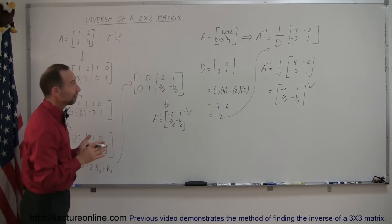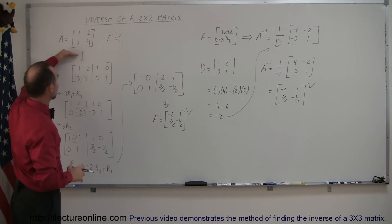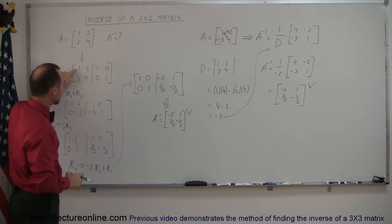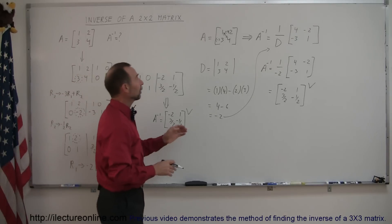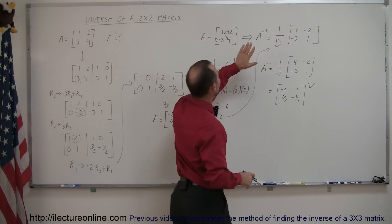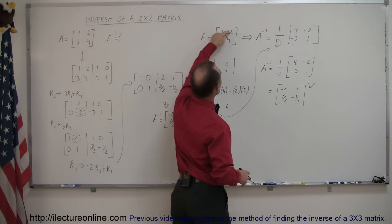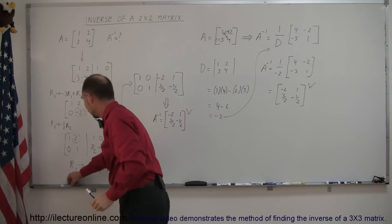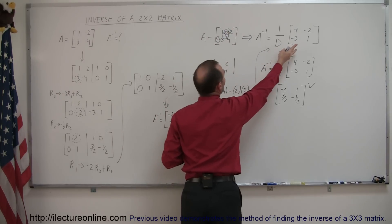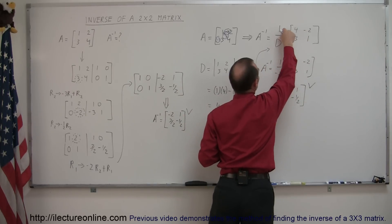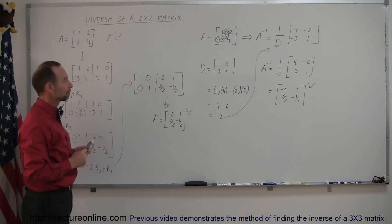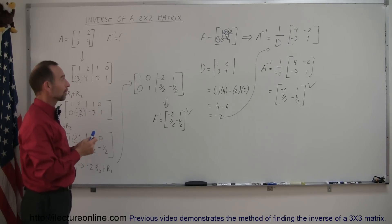So there are two ways to find the inverse of a 2x2 matrix. The traditional method pairs it with the identity matrix and uses row operations to transform the left side into the identity; what remains on the right is the inverse. Alternatively, the shortcut formula gives the inverse as 1 over the determinant — found as ad minus bc — times the same matrix with the diagonal elements reversed and negatives placed in front of the other two. Hopefully this helps you with your homework. Good luck.